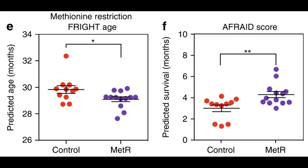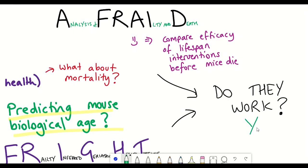Conversely, when they placed mice on methionine restriction, which has been previously shown to extend both healthspan and lifespan of male mice. And so by calculating the FRIGHT AGE, they found that the methionine-restricted mice had an age 0.7 months younger than the control-fed mice. And by using their AFRAID clock, they could predict that the methionine-restricted mice would live 1.3 months longer than controls. And so they concluded that their FRIGHT AGE and AFRAID clock models are responsive to healthspan and lifespan-extending interventions.